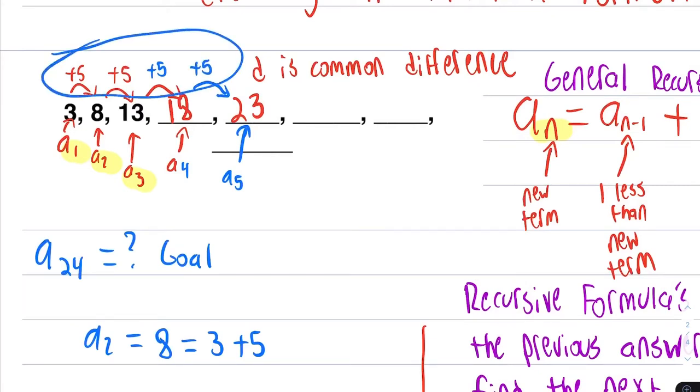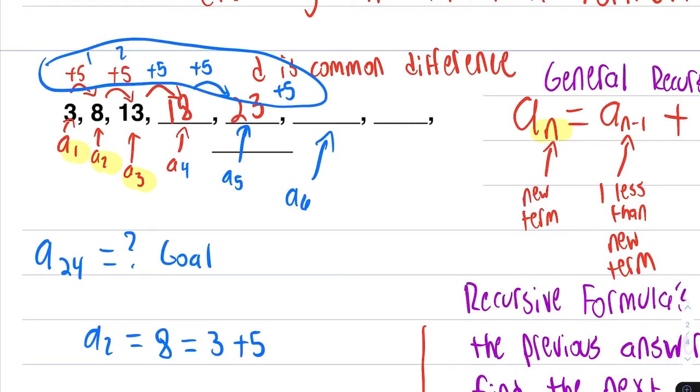4 times. To get A6, can you guess? We would just do one more, plus 5. So then we have 1, 2, 3, 4, 5 times that we added 5.